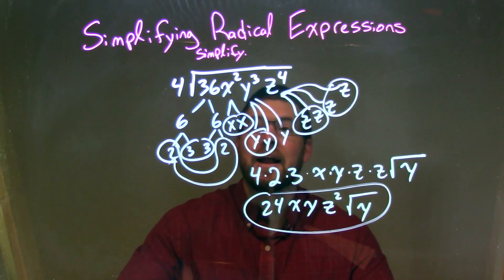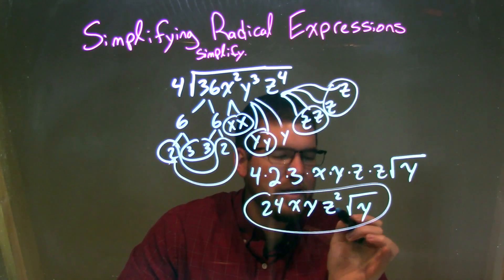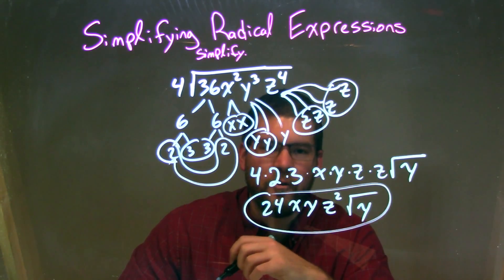From there, I simplify, and I got my final answer, overall simplification here, which is 24xyz squared times the square root of y.